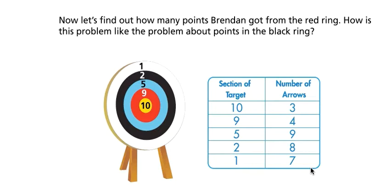Now, let's find out how many points Brendan got from the red ring. How is this problem like the problem about points in the black ring?